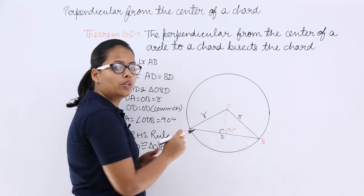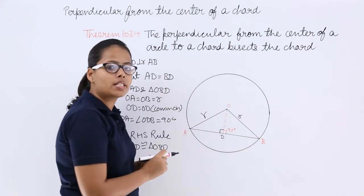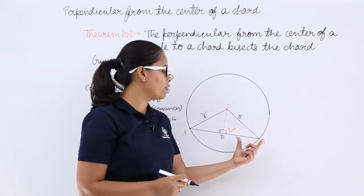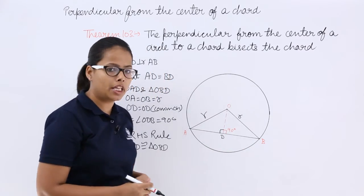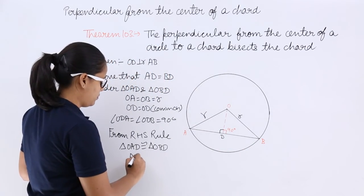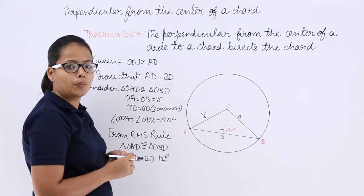This side of this triangle is equal to this side. This side is the common side. So the third side, which is AD, and the third side of this triangle, which is BD, will also be equal. Hence proved.